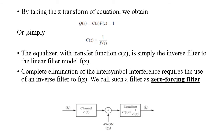Taking the Z-transform, we obtain Q(z) = C(z)·F(z) = 1, which means C(z) = 1/F(z). The equalizer with transfer function C(z) is simply the inverse filter to the linear filter model F(z).